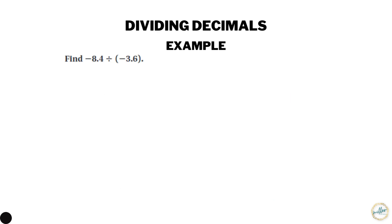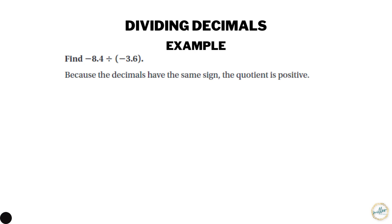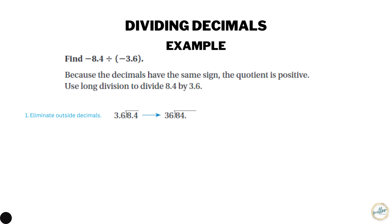Next, let's try dividing decimals. Example: find negative 8.4 divided by negative 3.6. Because both decimals have the same sign, the answer is going to be positive. We'll use long division to divide 8.4 by 3.6. Our first step is to eliminate any decimals in the number outside the bracket — move the decimal one place to the right so 3.6 becomes 36. We do the same to the number inside, so 8.4 becomes 84. We add a couple zeros after the decimal inside the bracket, then move the decimal straight up to where we put the answer.